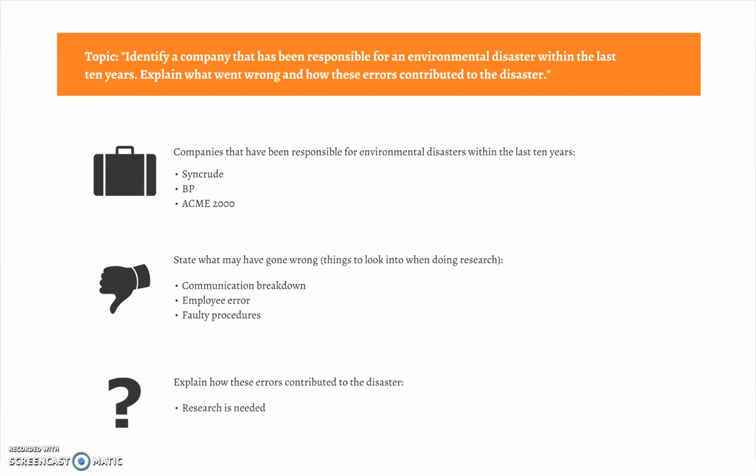Companies that have been responsible for environmental disasters within the last 10 years include Syncrude, BP, and Acme 2000. Things that may have gone wrong include: communication breakdown, employee error, and faulty procedures.